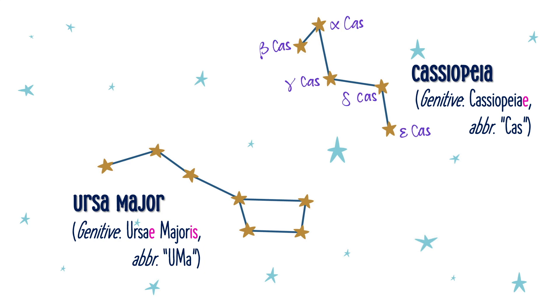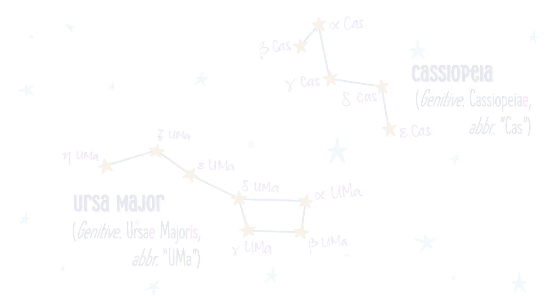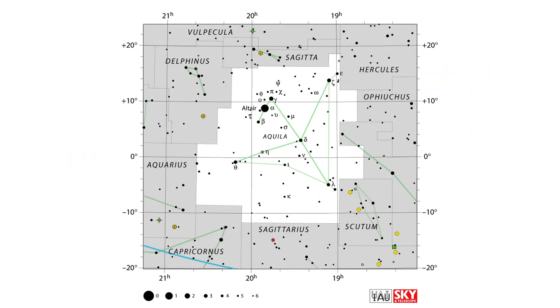The Bayer designation of naming stars, named after German astronomer Johann Bayer, uses Greek or Latin letters accompanied by the genitive case of the constellation's name to identify the stars within it. Now, it might seem like we're derailing from our topic of proper motion, but stay with me, it'll all make sense in a minute.